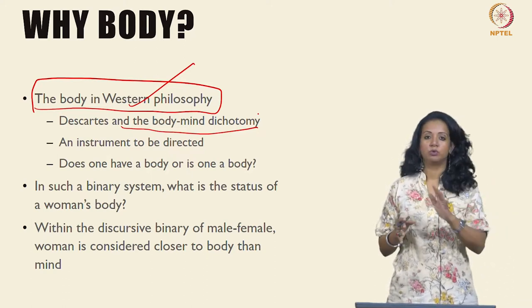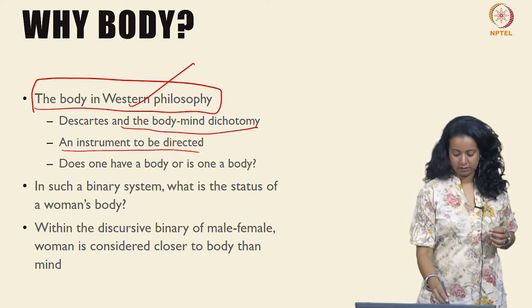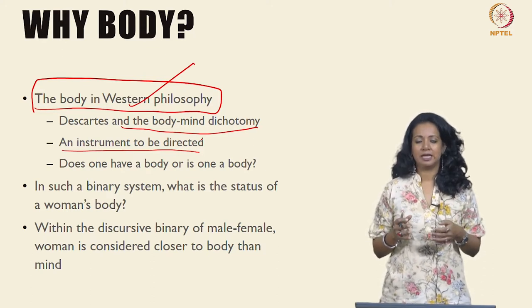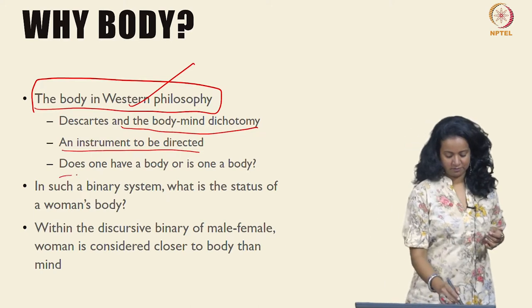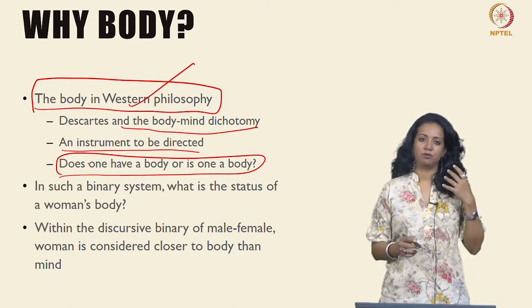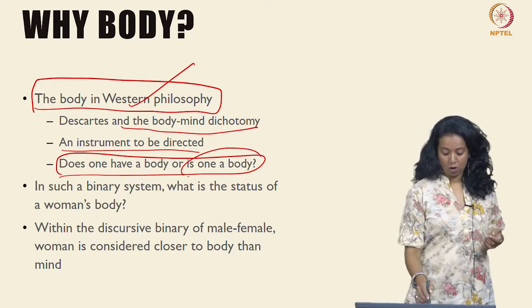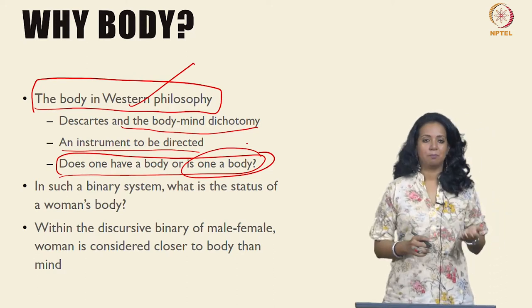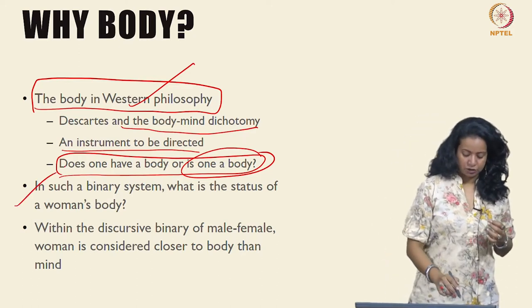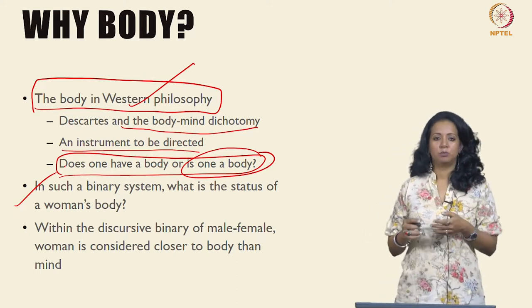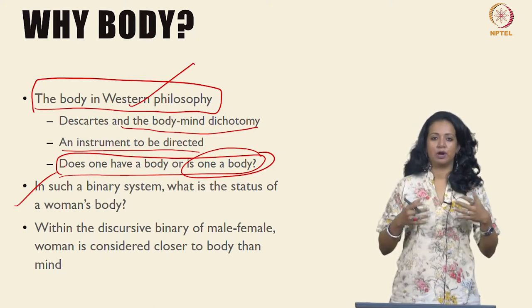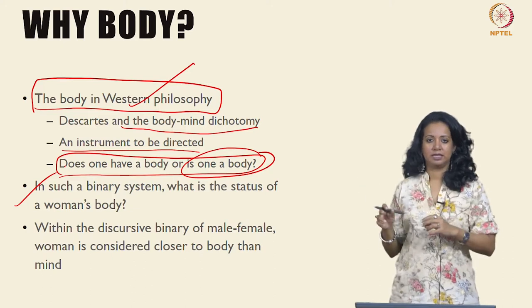One has a mind through which one controls the body; the body, in such an understanding, is an instrument to be directed. You remember the fairly popular saying, 'I think therefore I am,' which begs the question: does one have a body, or am I a body? Do I have an embodied understanding of self? Do I move through the world as if body and mind are one? And in such a binary system, what is the status of a woman's body — are there differences in this formulation in relation to woman's thinking or woman's body?